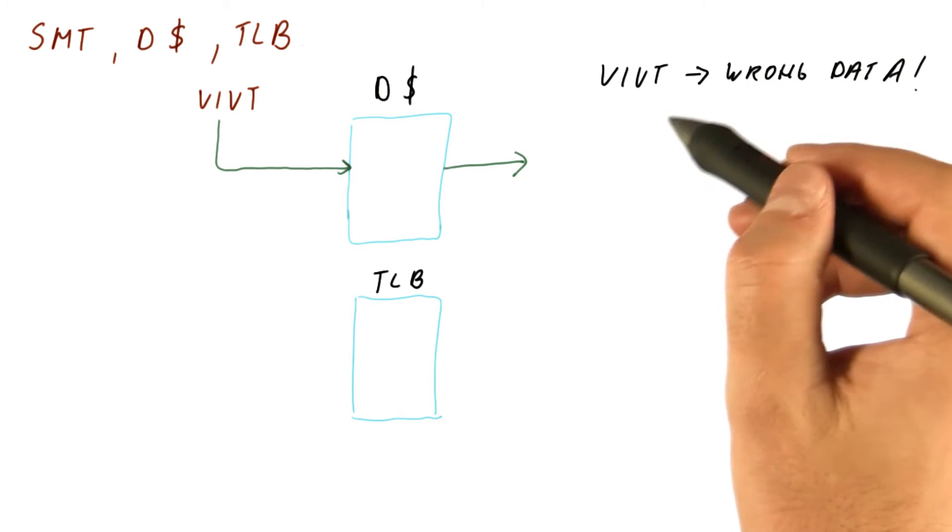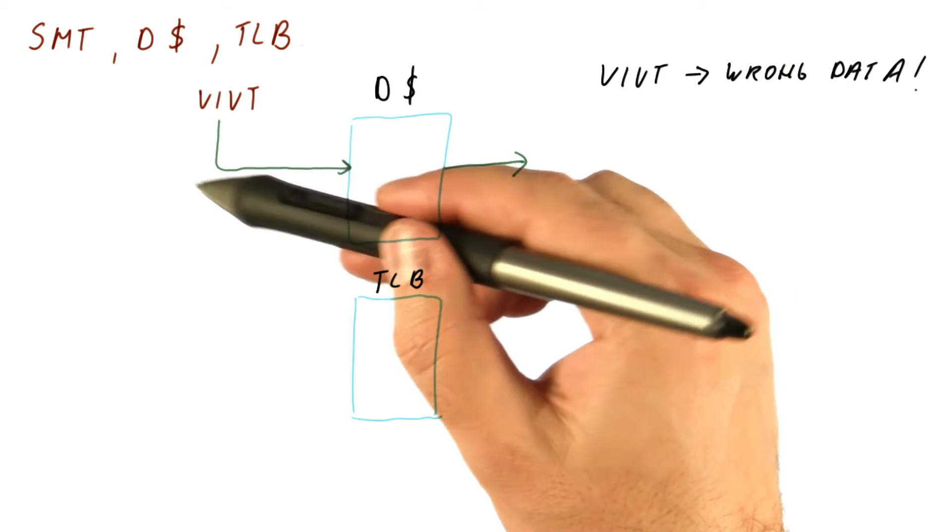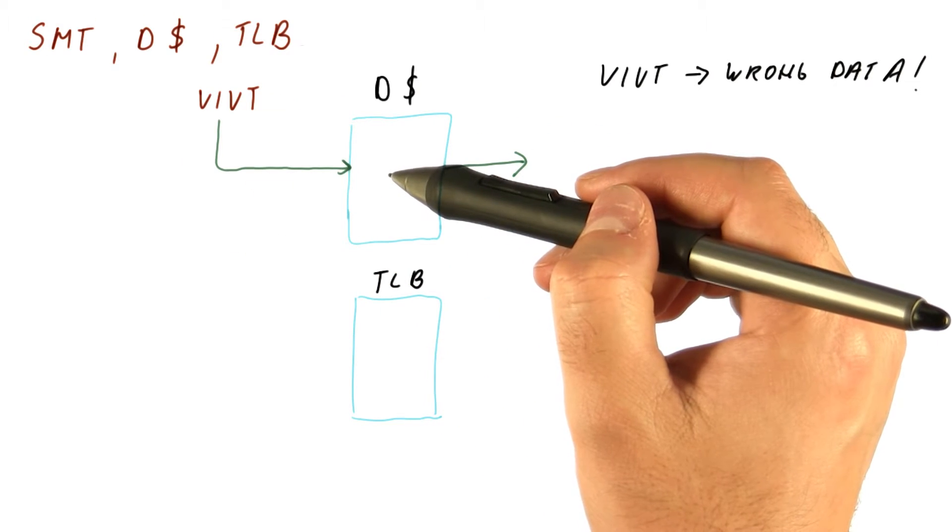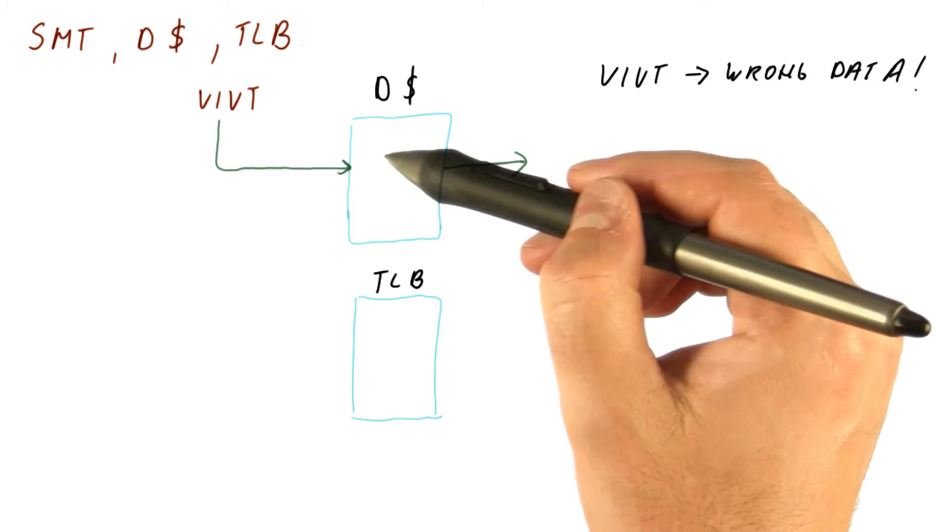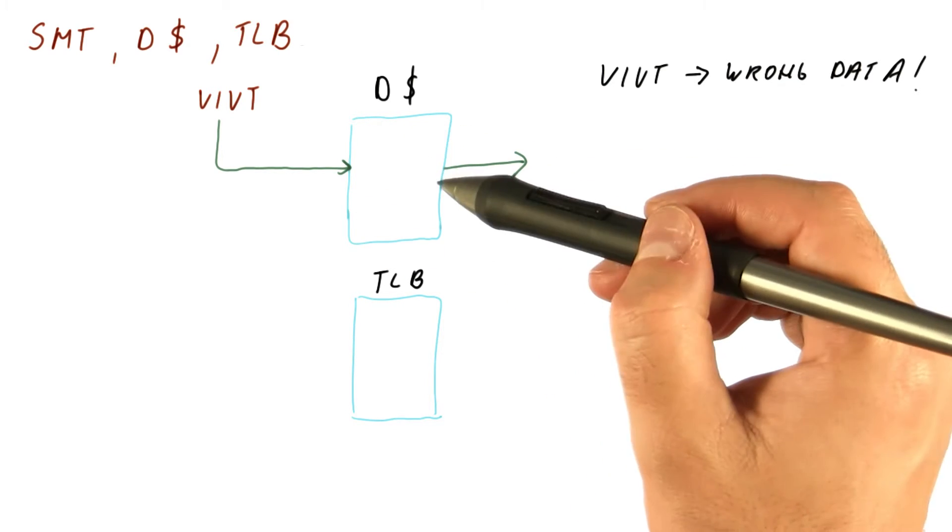So with the virtual indexed, virtually tagged cache, we are running a real risk of getting the wrong data. Because the same address in the two threads that are accessing the cache alternatingly in a very haphazard way might map to different physical addresses, but the data cache doesn't know that.